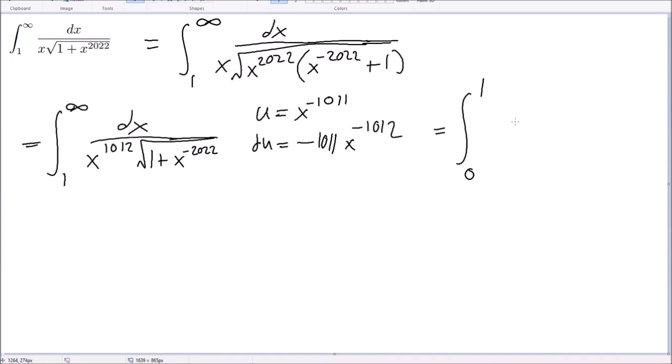We get du over 1011 square root 1 plus u squared.